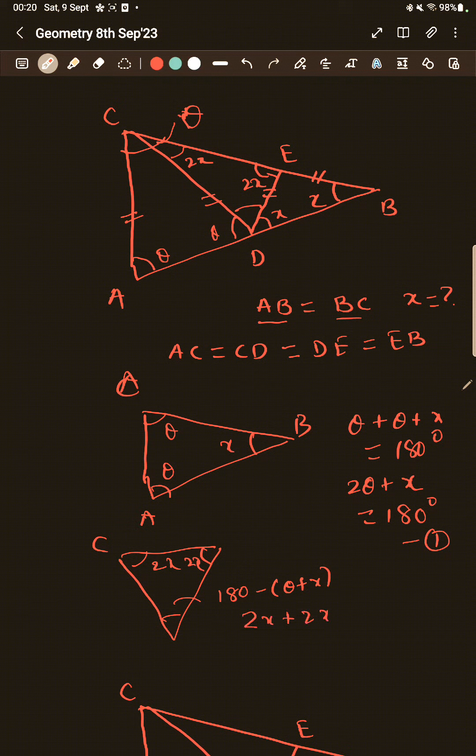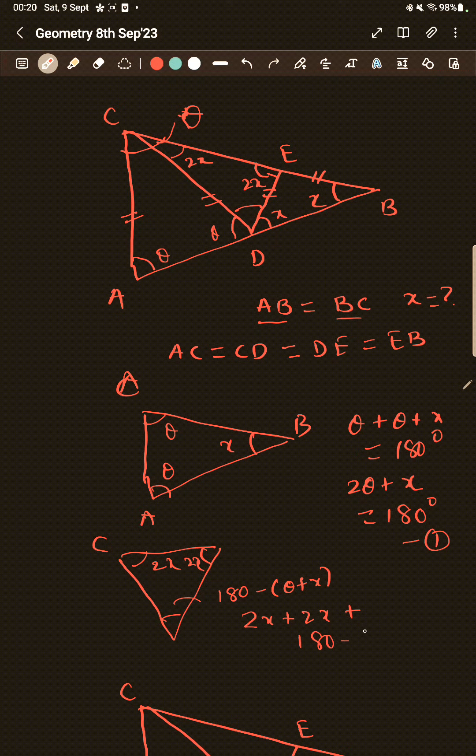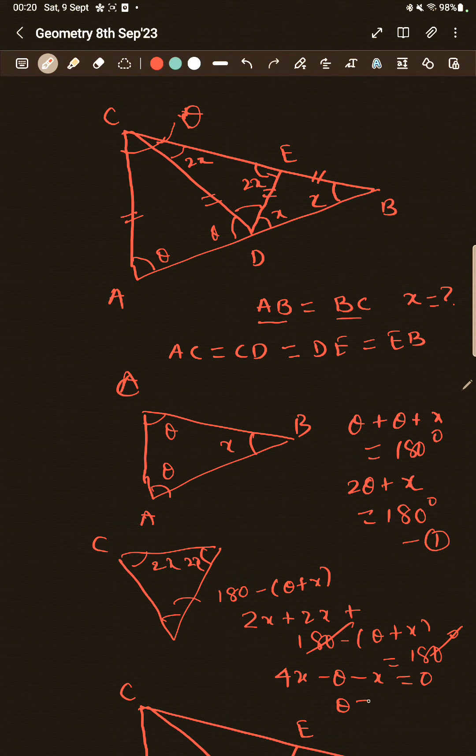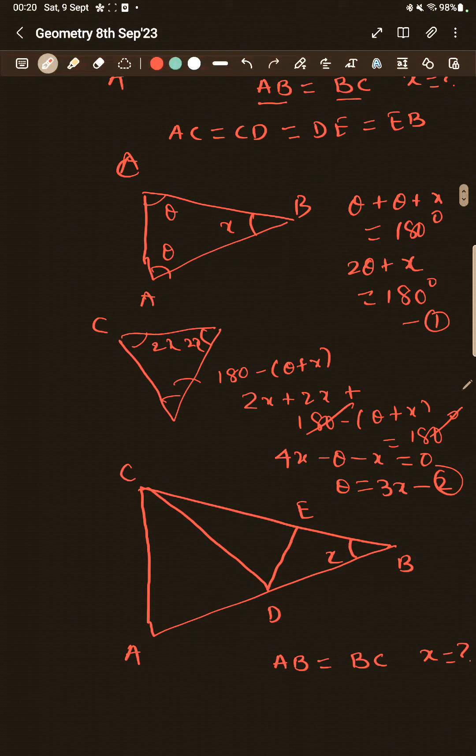So 2X plus 2X plus 180 minus theta plus X becomes equal to 180 degrees. Just solving this will give us 4X minus theta minus X equal to 0 and I will get theta is equal to 3X, which is equation 2 here.